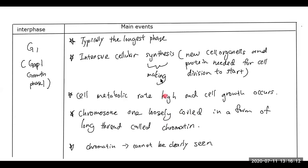The chromosomes are loosely coiled in a form of long thread that we call it as a chromatin. Chromatin cannot be clearly seen under the microscope. So this is G1 phase. I need you to write down in the notes.